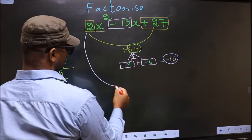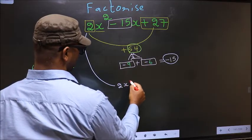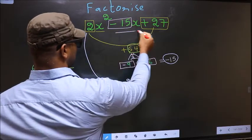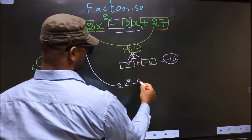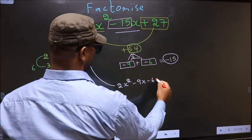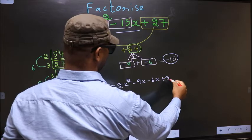Now you should change this to 2x square. In place of minus 15x, now we should write this. Minus 9x minus 6x plus 27.